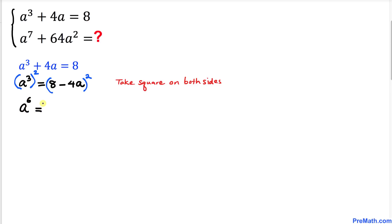Equals, now let's expand this binomial on the right-hand side by using the (a - b)² formula, so we're going to end up with 64 - 64a + 16a².